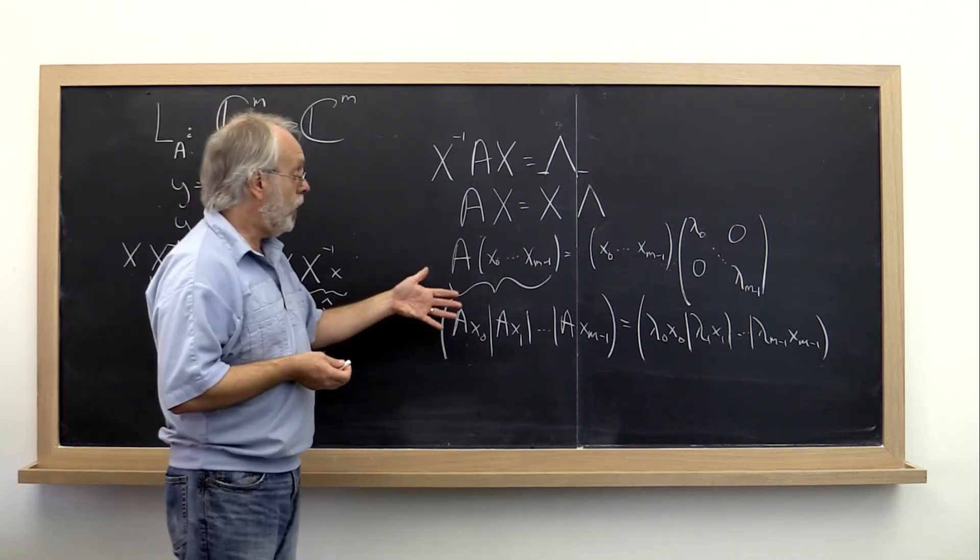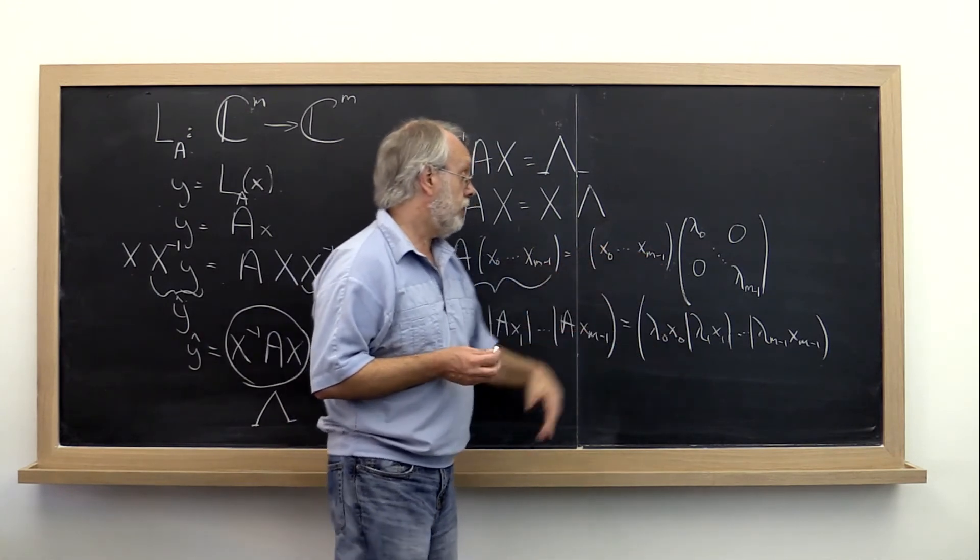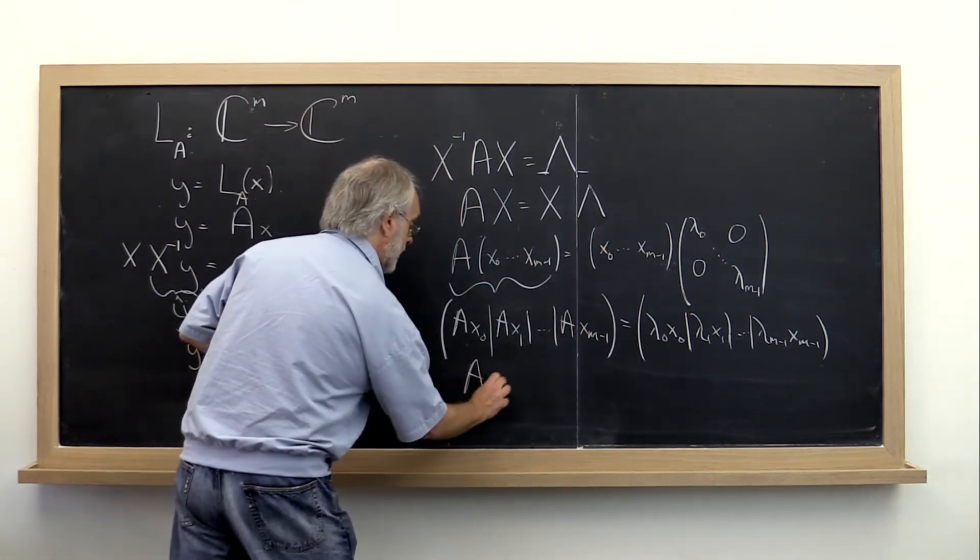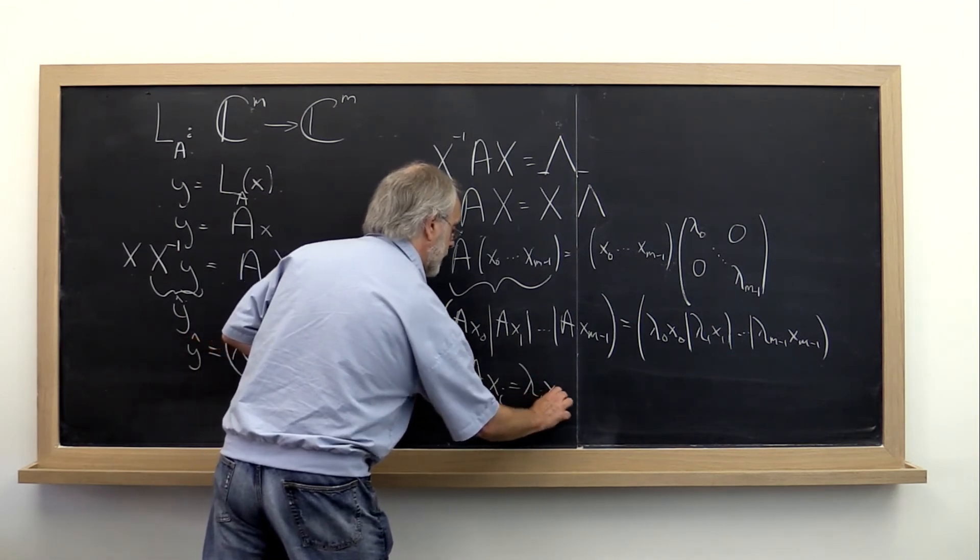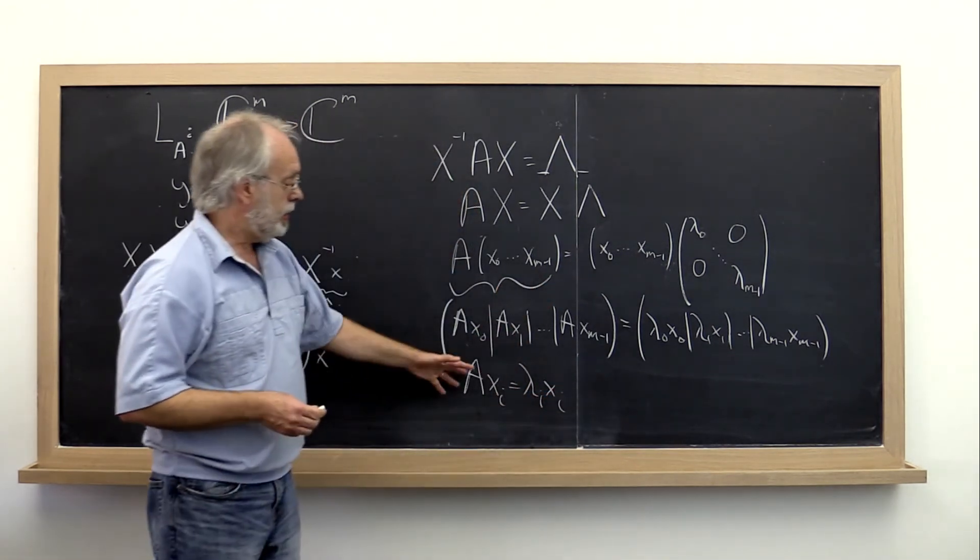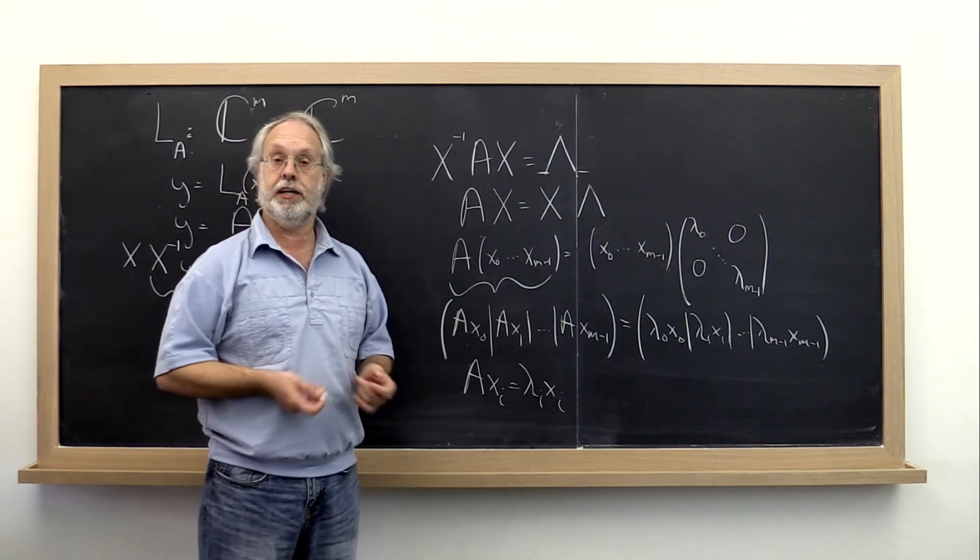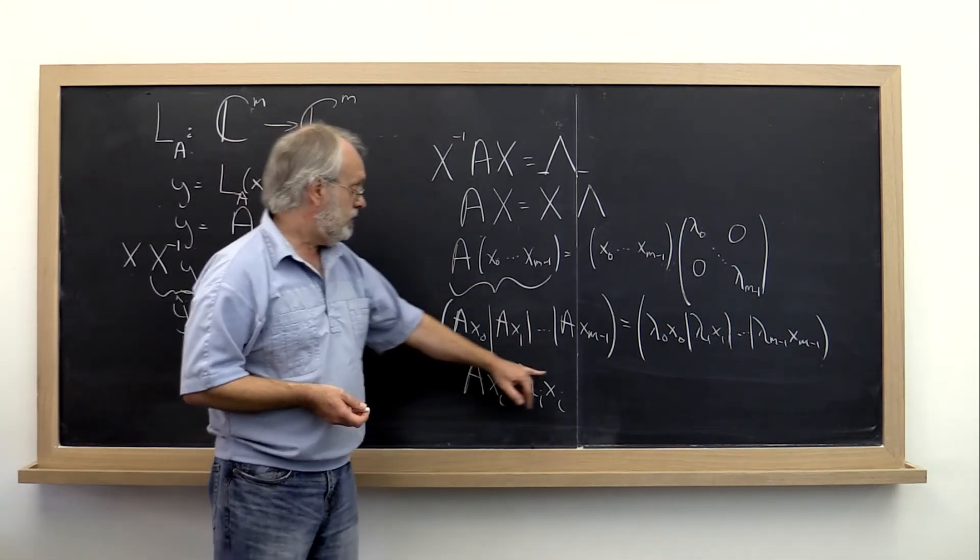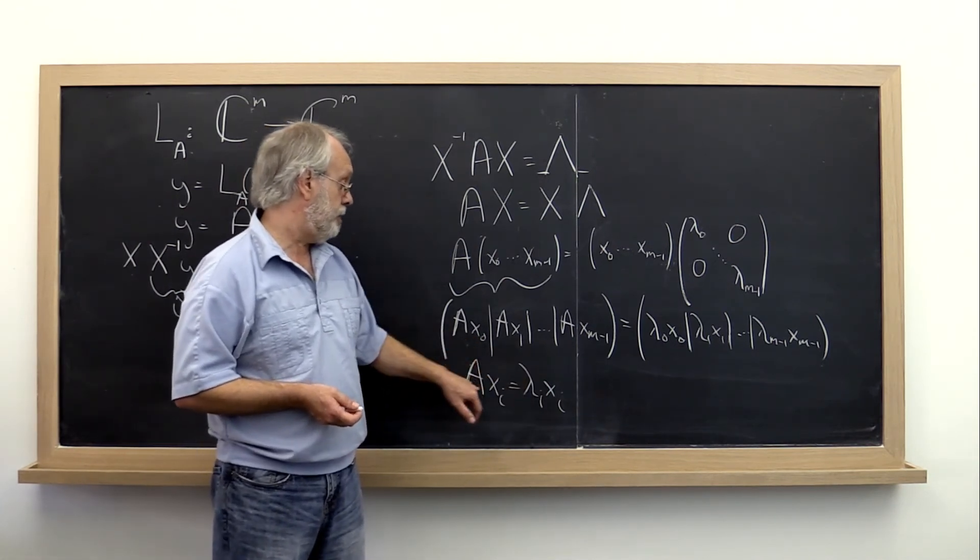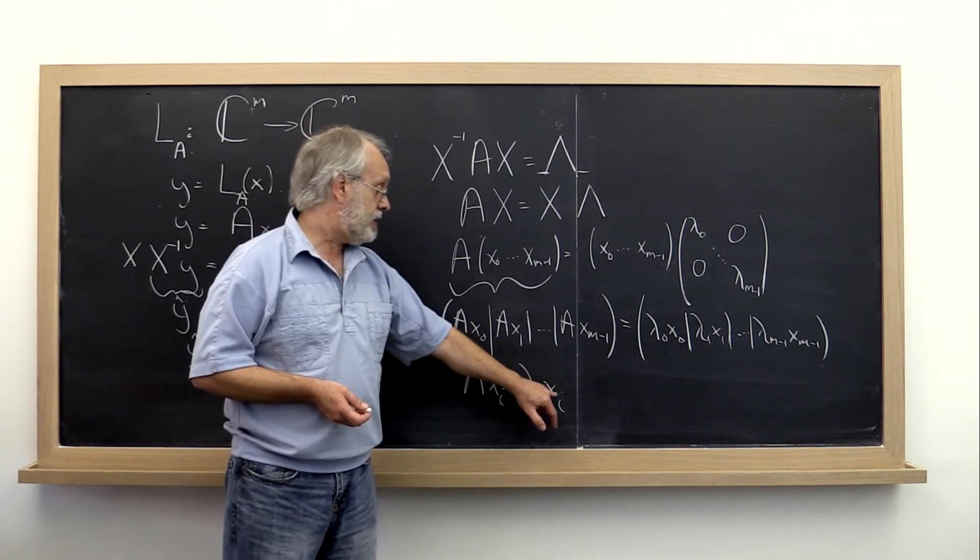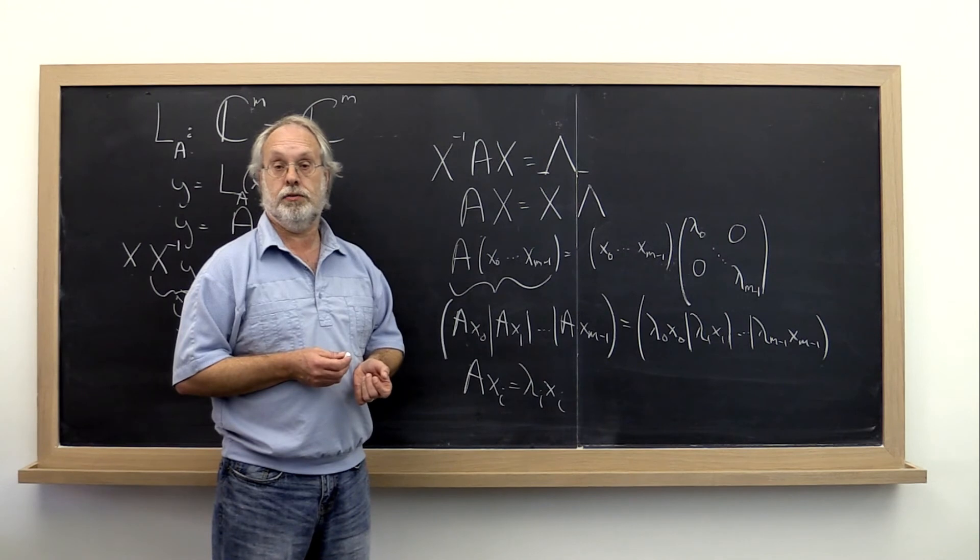If we now equate columns on the left to columns on the right, what we find is that A times xi is equal to lambda i times xi. And lo and behold, that's something that you recognize from your earlier linear algebra course. Because what this here says is that lambda i should be an eigenvalue of matrix A. And x sub i should be a corresponding eigenvector of that matrix.